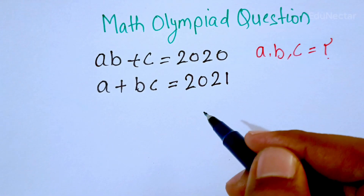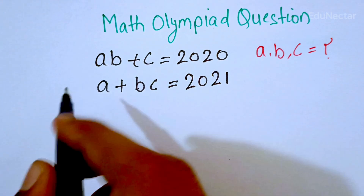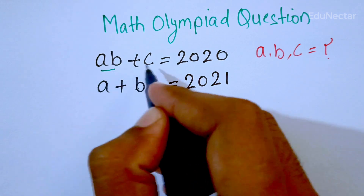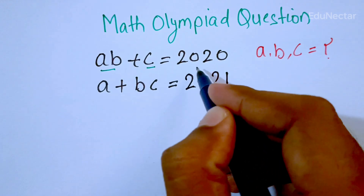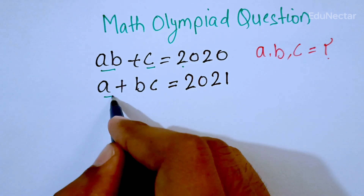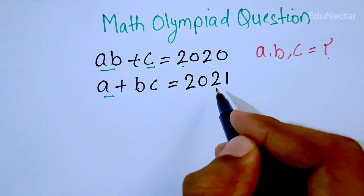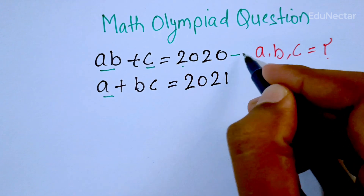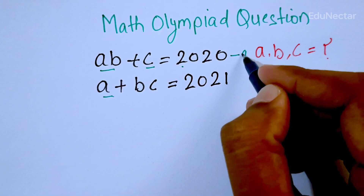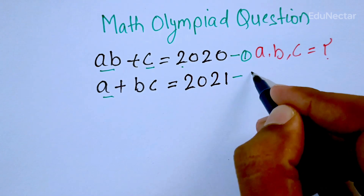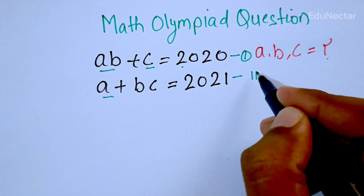Hello and welcome. As an actor, I am going to solve an interesting problem. ab plus c is equal to 2020 — this is equation number one. a plus bc is equal to 2021 — this is equation number two.